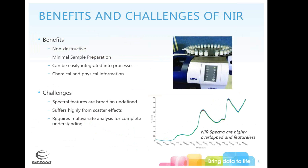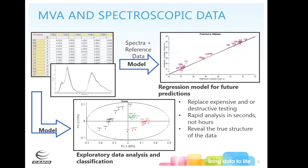Because you have all these overlapping bands, you often get a very broad band that may have individual bands underneath to pull out your information. We can do any sort of multivariate data analysis on spectroscopic data, just like process data — exploratory analysis and classification using principal components analysis, maybe LDA or SIMCA. We can also get quantitative analysis out of it with spectra and reference data, plus regression models for future predictions.